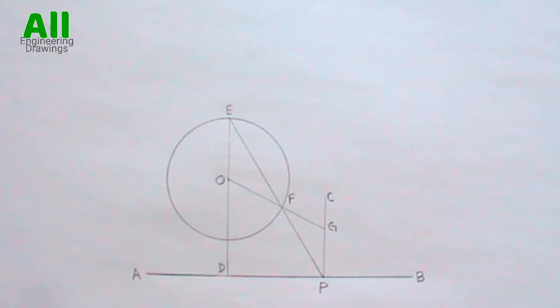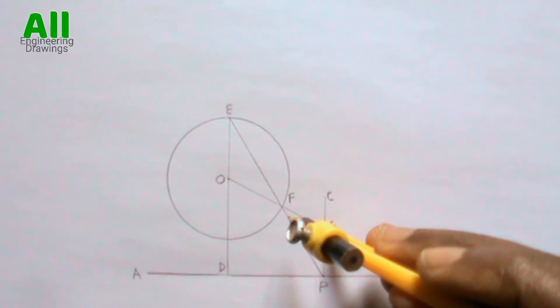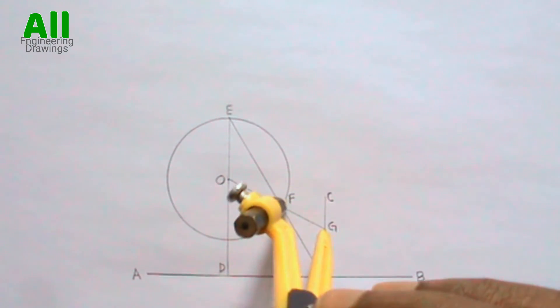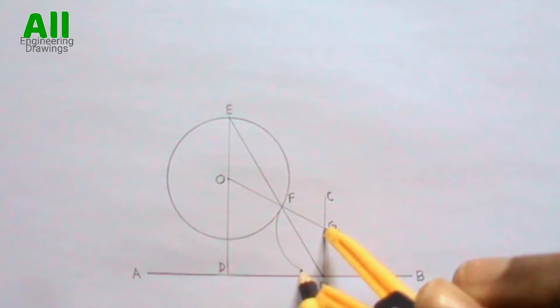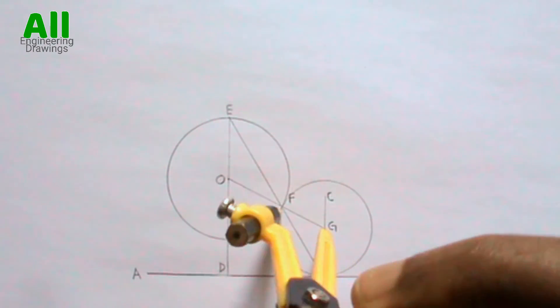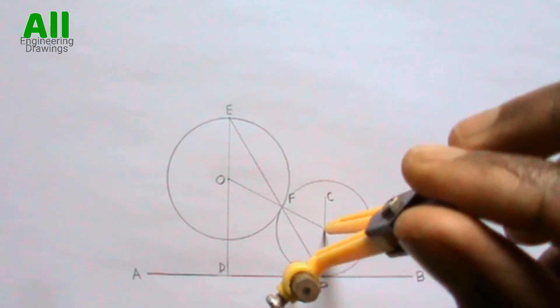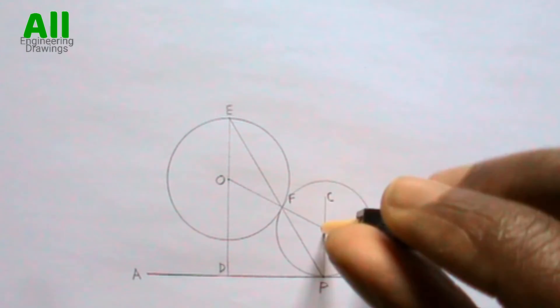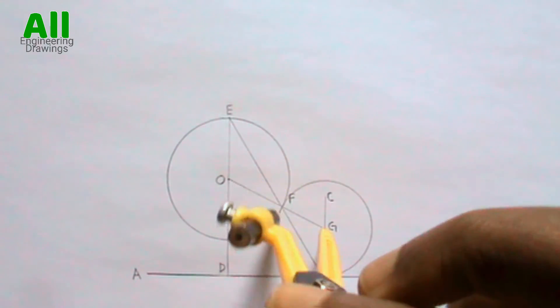Point D is the center of the cycle. Place your compass on point D then produce your cycle. If your construction is accurate, your cycle will just pass through point F and point P.